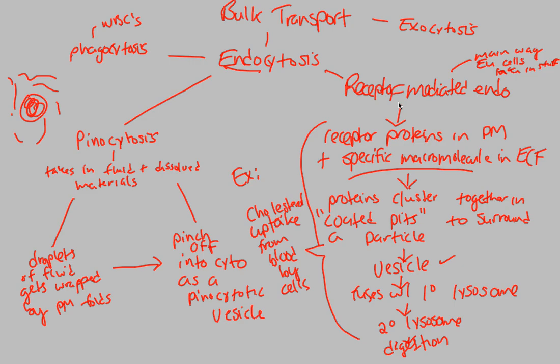We've now concluded our discussion on membranes and transport. Bulk transport involves phagocytosis and pinocytosis, which are both forms of endocytosis, as well as receptor-mediated endocytosis, and also exocytosis, which is the release of materials. We now have a much better understanding of what membranes are in terms of their structure and how that relates to transport.